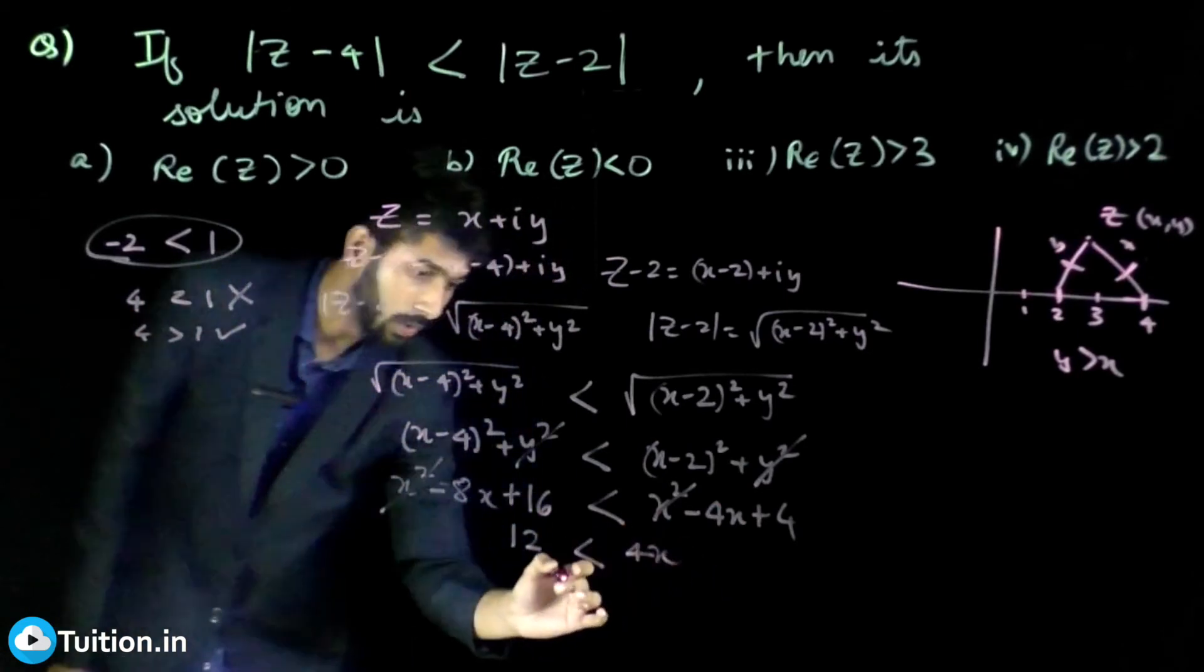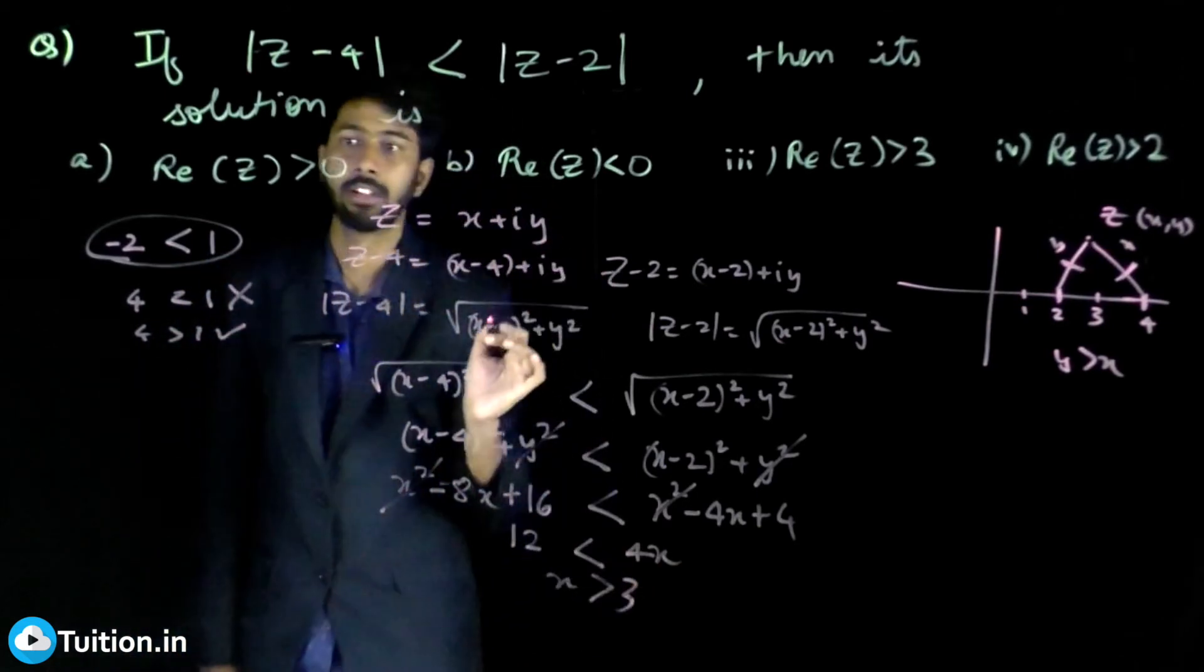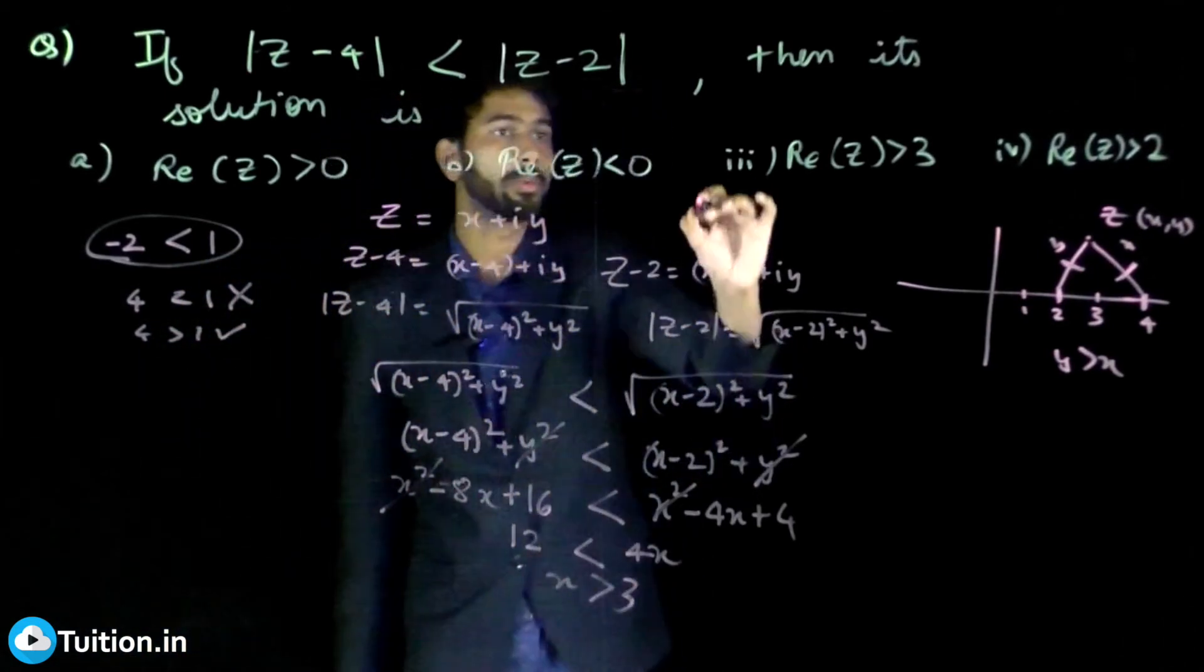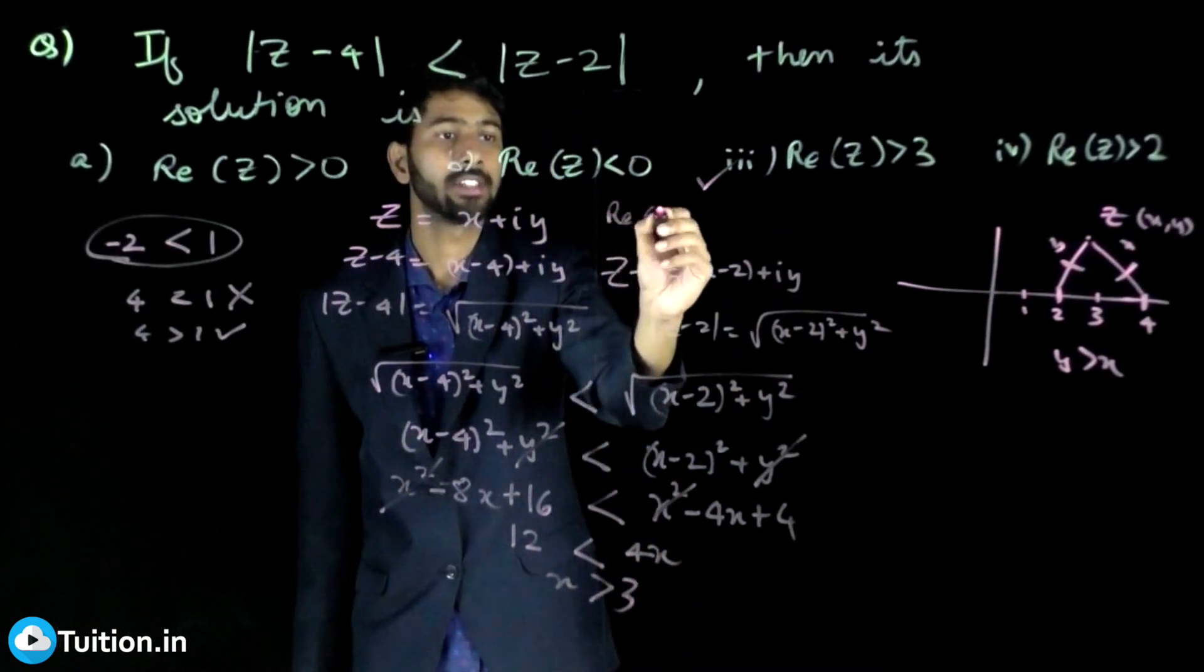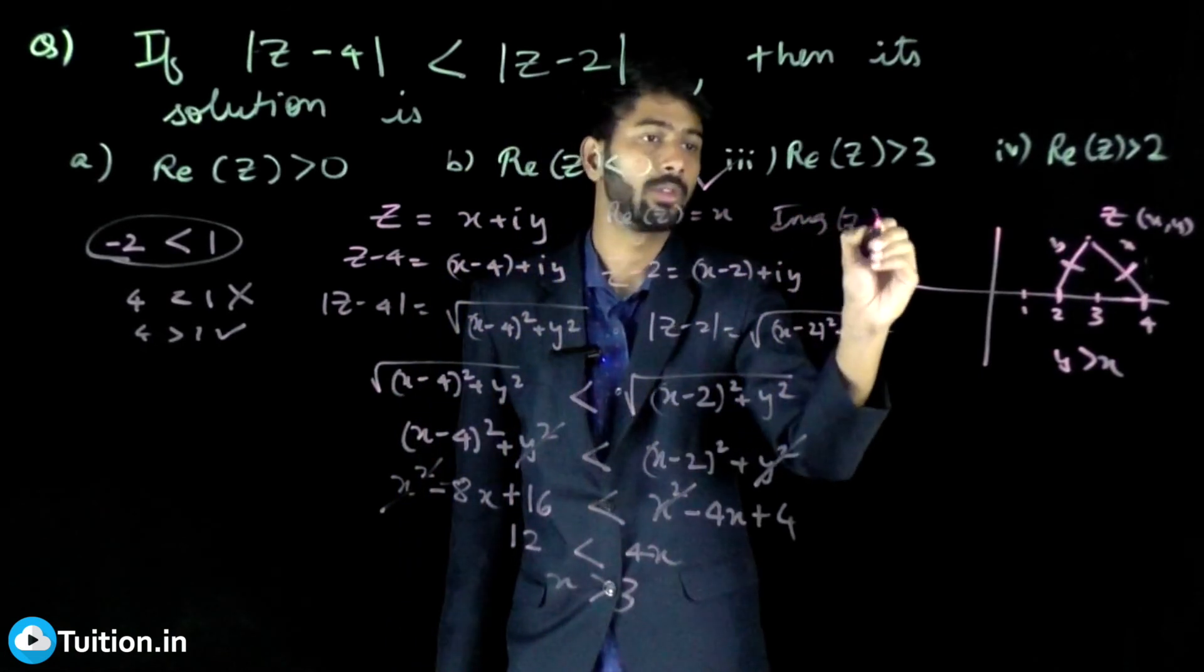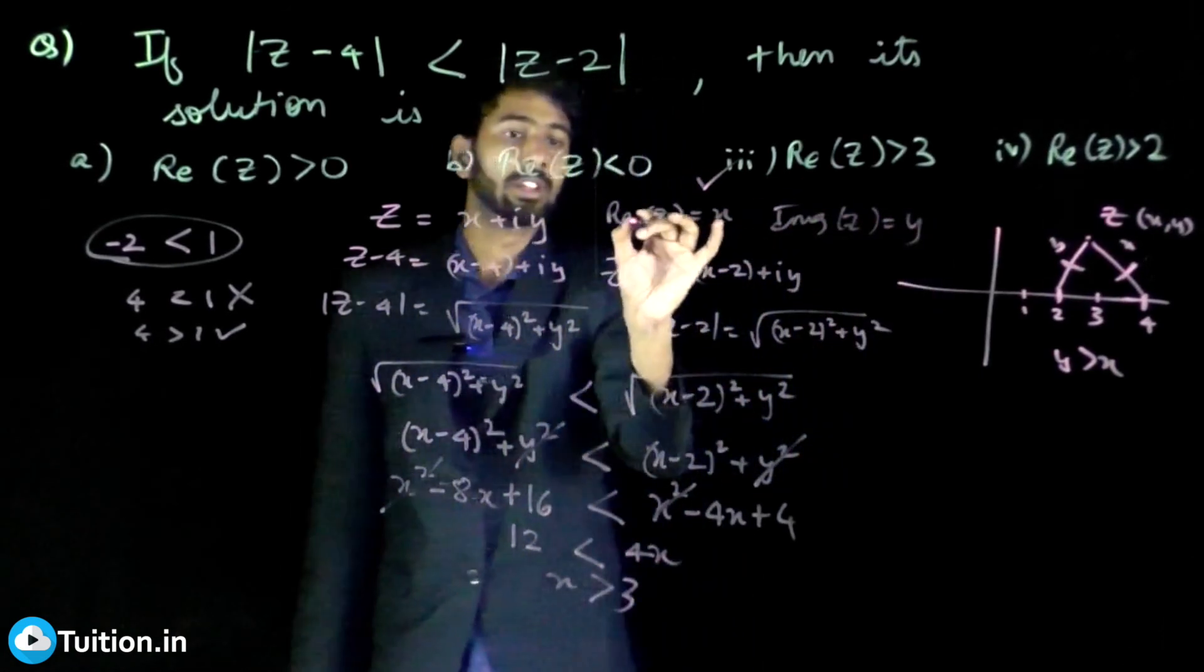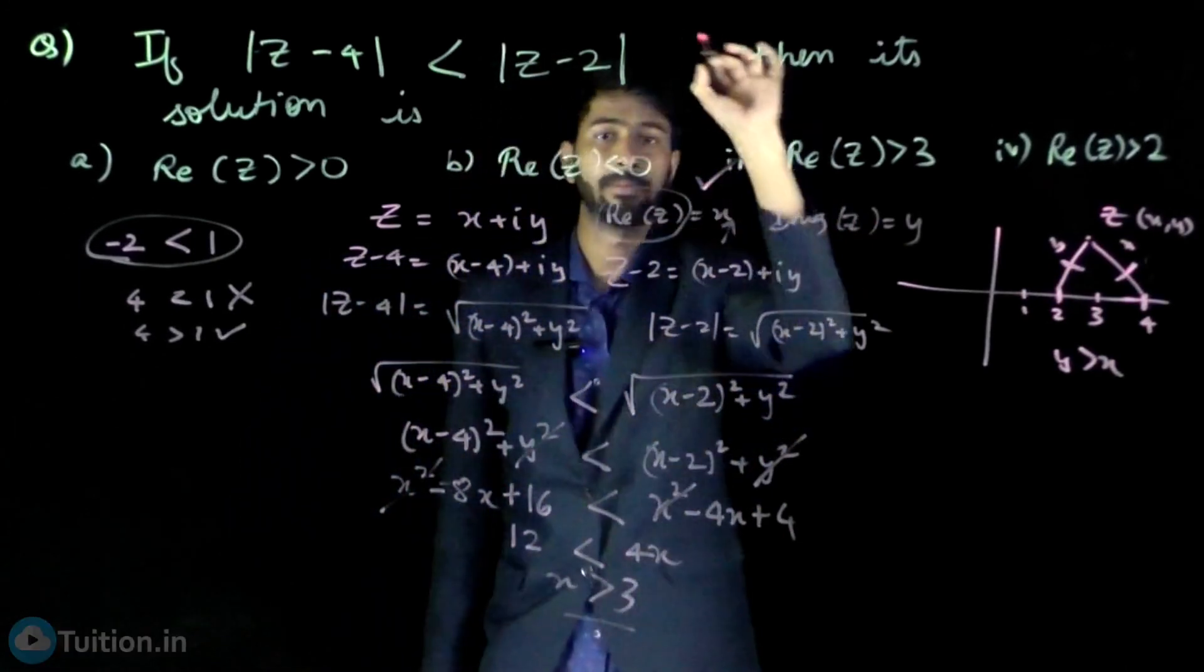The correct option is this. What is X? It is the real part of Z, so Re(Z) is X and imaginary part of Z is Y. So the real part of Z, which is your X, is greater than 3. This is the answer.